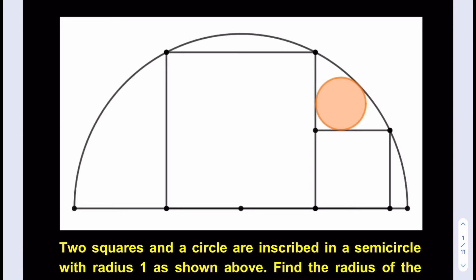We know that the radius of the semicircle is one, so let's make some connections. I'm going to connect the center to one of the vertices of the bigger square, and then make a connection between the centers — we can use the fact that that segment is going to pass through the point of tangency.